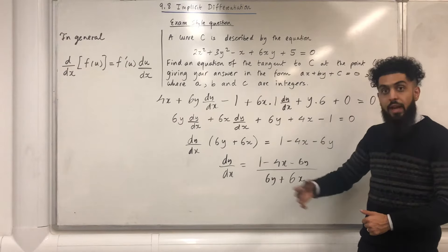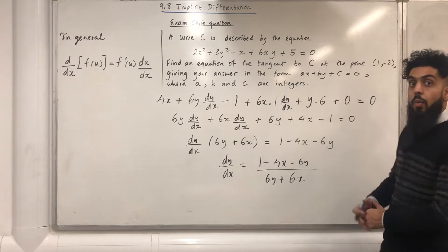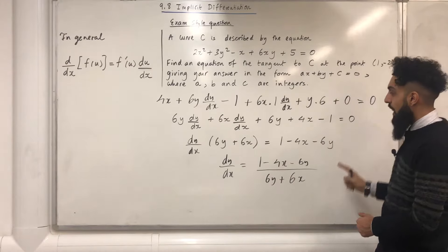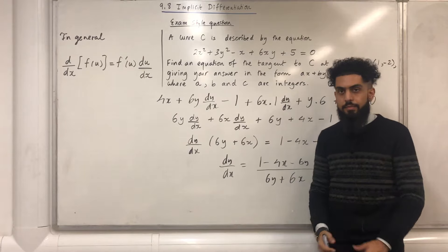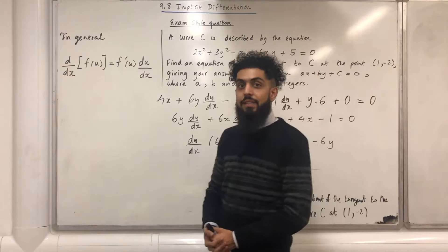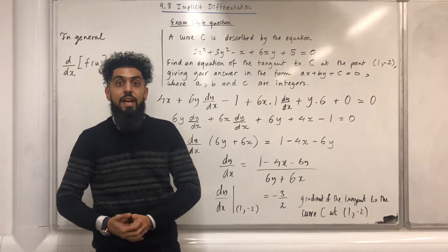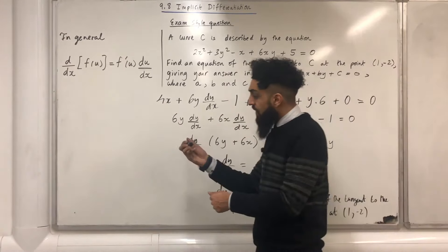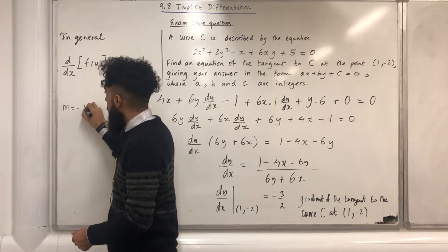Now I have the gradient function, I can work out the gradient of the tangent to curve C at the point (1, −2). Substituting x equals 1 and y equals minus 2 into dy over dx gives minus 3 over 2. So minus 3 over 2 represents the gradient of the tangent to curve C at the point (1, −2). I'll call it m, which equals minus 3 over 2.